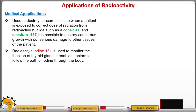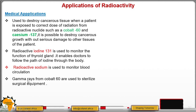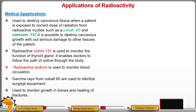This radioactive substance enables the doctors to follow the path of iodine through the body. Then we have radioactive sodium, which is used to monitor the blood circulation. Also, gamma rays from Cobalt-60 are used to sterilize surgical equipment in hospitals, and those radiations can be used to monitor growth in bones and healing of fractures.